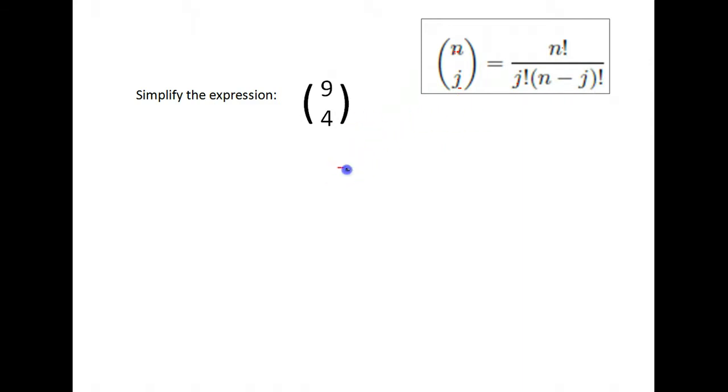This is what it would look like. We do our top number factorial, so we have nine, that was our top number, factorial, over the bottom number that you have there, four factorial, and then times the two subtracted, so nine minus four factorial. I'm going to simplify that a little. So that's nine factorial over four factorial times nine minus four is five factorial.